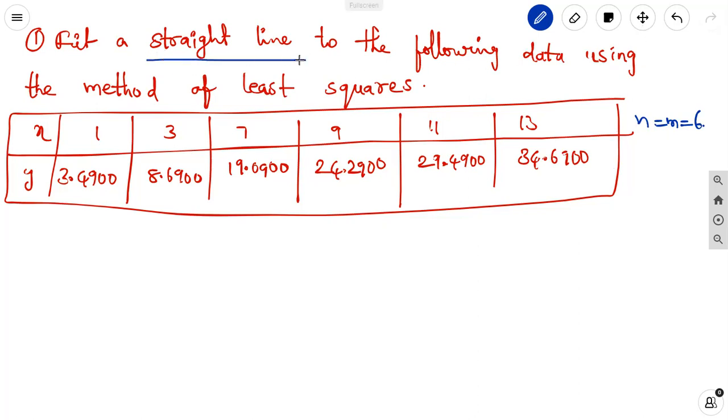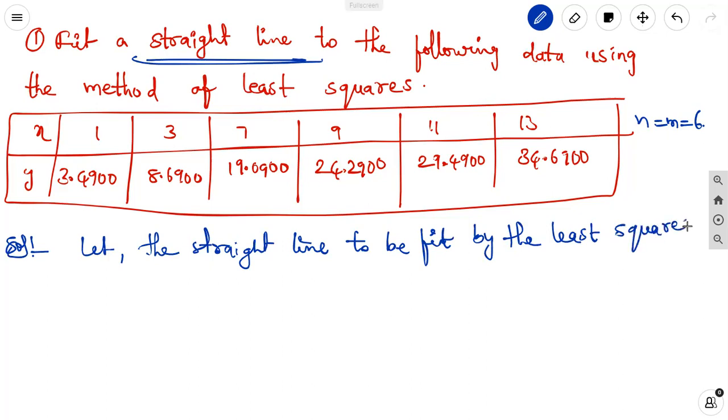First, straight line means we can take the general form of the straight line. So let the straight line to be fit by the least squares method. The least squares method is y equal to a plus bx. Let it be equation 1. Now from the least squares method we can find out the derivatives of the normal equations.